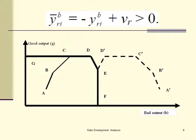So you see these dots aligned, and this will be the new frontier: A prime, B prime, C prime, D prime, and A. So this picture shows you three possible approaches to treat the undesirable factor. In this case, I'm using a bad output as an example.